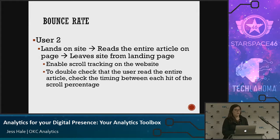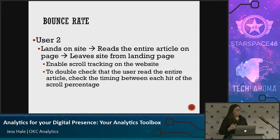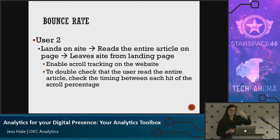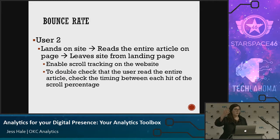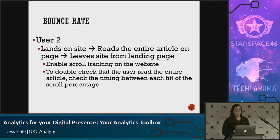Another thing you can do is set up scroll tracking. Say a user lands on your site, reads the entire article, and leaves from the landing page. You can do scroll tracking to double-check how long the user actually took to read the content, based on hit timestamps between each scroll event. This enhanced tracking sends a hit into Google Analytics to tell you — did they just scroll up and down for three seconds, or did they actually take 15 to 30 seconds between each scroll? Depending on your content and goals, you can set those thresholds up.